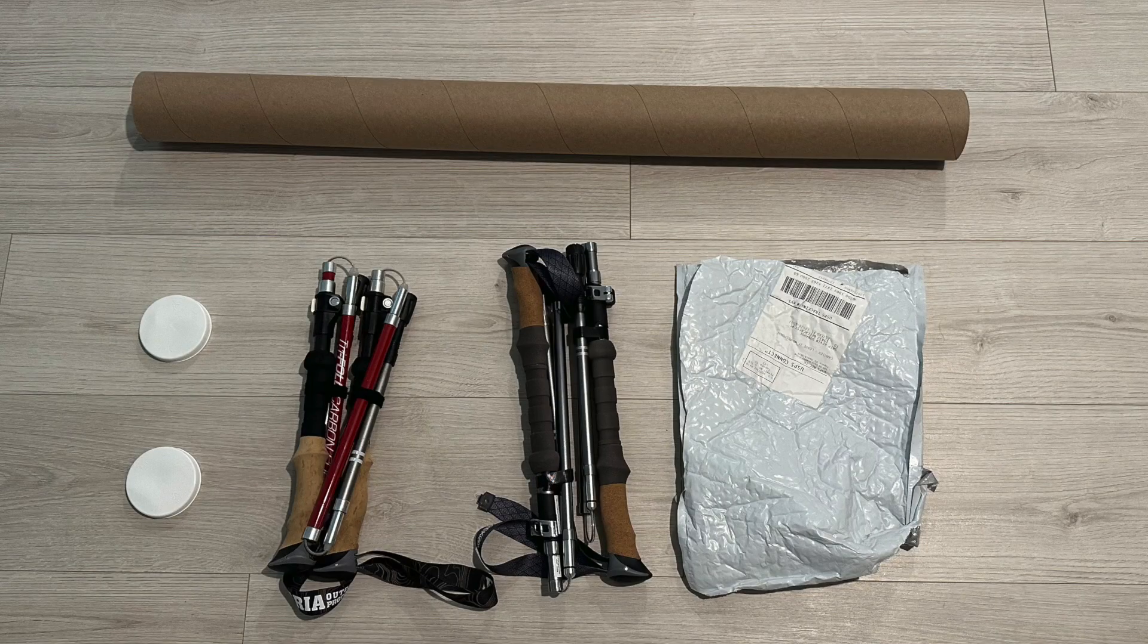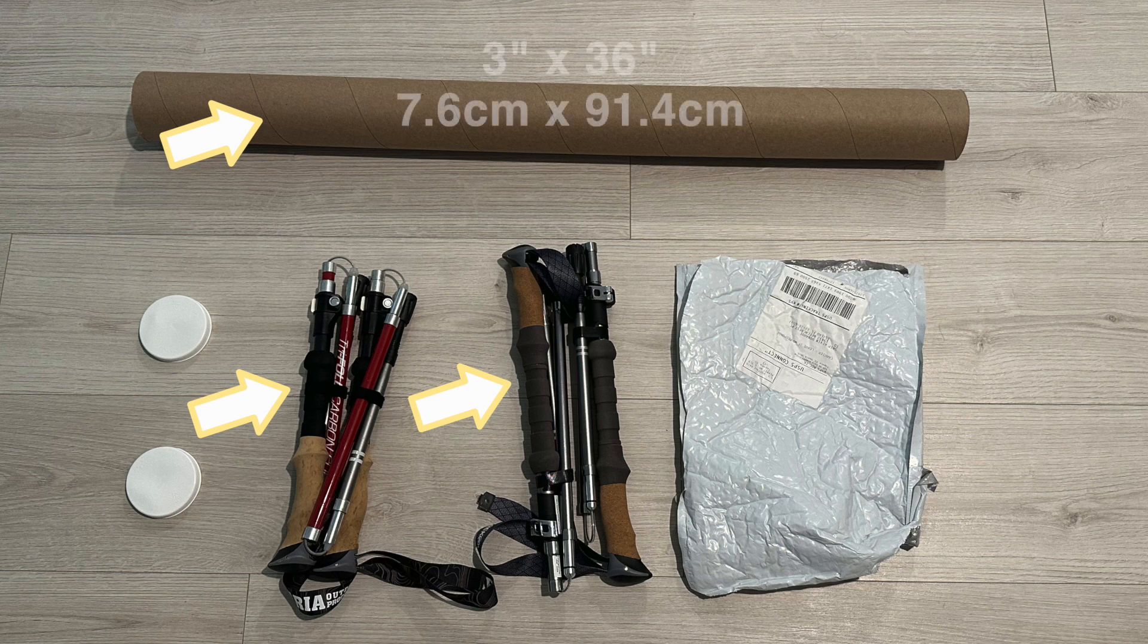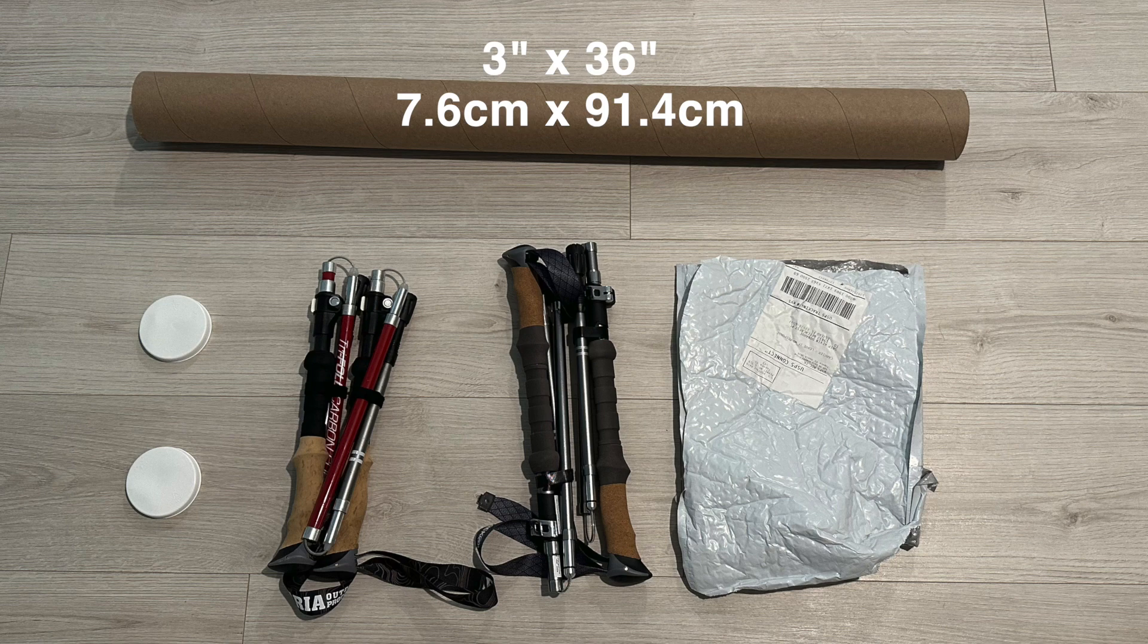For my next Camino my son is joining me, so today I'm packing two sets of poles into one packing tube. I'll use a slightly larger tube to accommodate the two sets, so I'm using a three inch diameter that is 36 inches long from Uline.